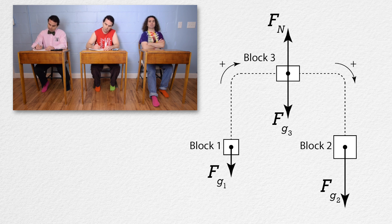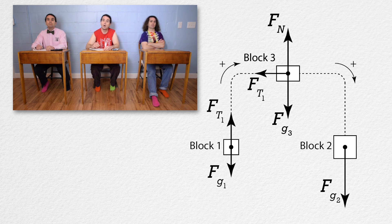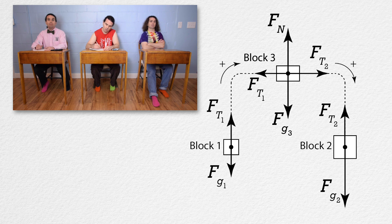And adding block three changes the tension forces. Now we need to label the tension force up on block one, tension force one, which has the same magnitude as the tension force one which acts to the left on block three. And we need to label the tension force up on block two, tension force two, which has the same magnitude as the tension force two which acts to the right on block three.